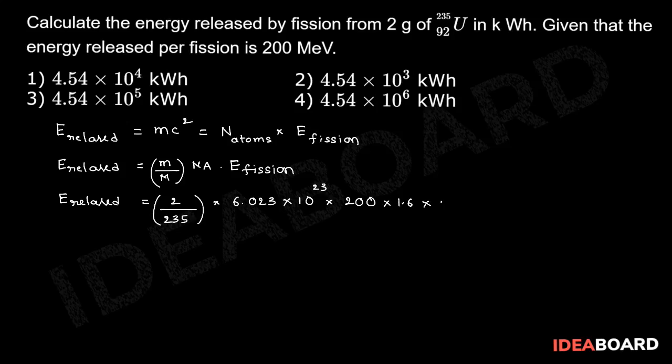200 into 1.6 into 10 power minus 13 joules. Thereby we have to convert the value into kilowatt hours.